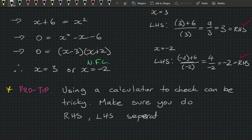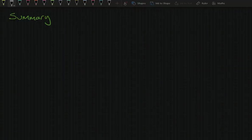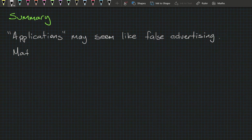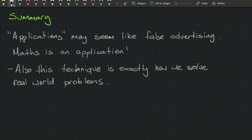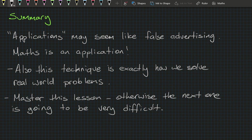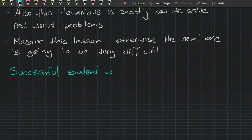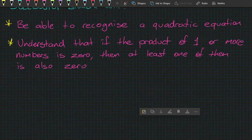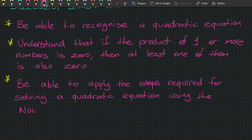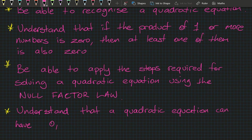Pause the video and do questions 6 and 7 in the new book and questions 8 and 9 in the old book, then come back for the summary. The main reason this lesson is important to applications is that this technique is exactly how we solve real-world problems. A successful student will be able to: recognize a quadratic equation; understand that if the product of two or more numbers is zero then at least one of them is zero; apply the steps for solving a quadratic using the null factor law; and understand that a quadratic can have zero, one, or two solutions. Work hard to get those skills — I'll see you in the next lesson!